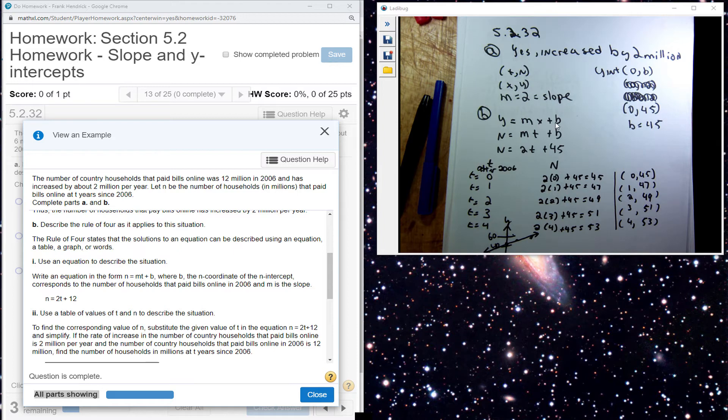We can say Y is equal to MX plus B. We also know that Y corresponds to N and T corresponds to X, so we have N is equal to MT plus B, where in this case my B is 45 and my slope is 2. So that's my equation.